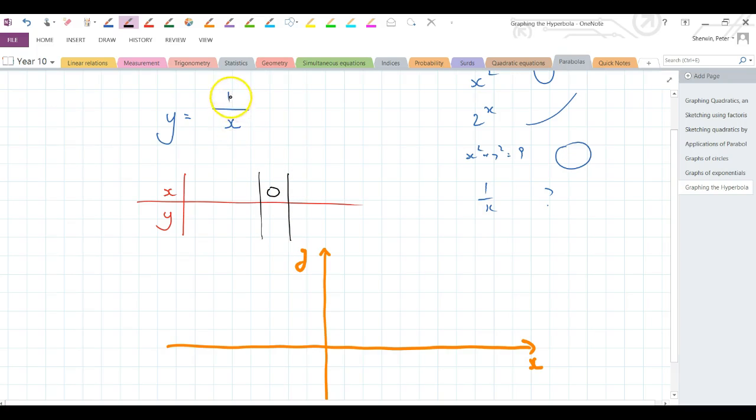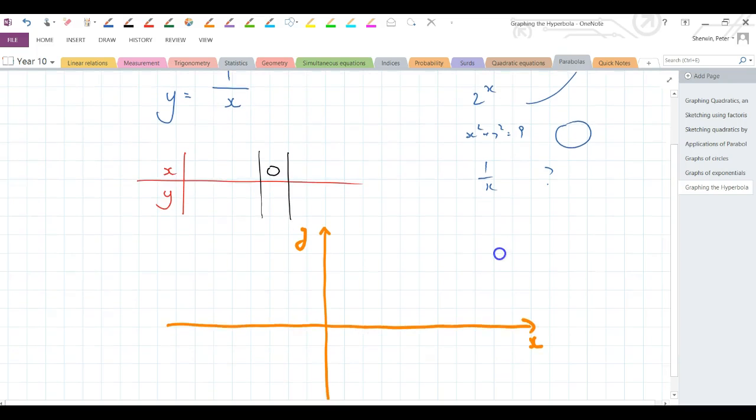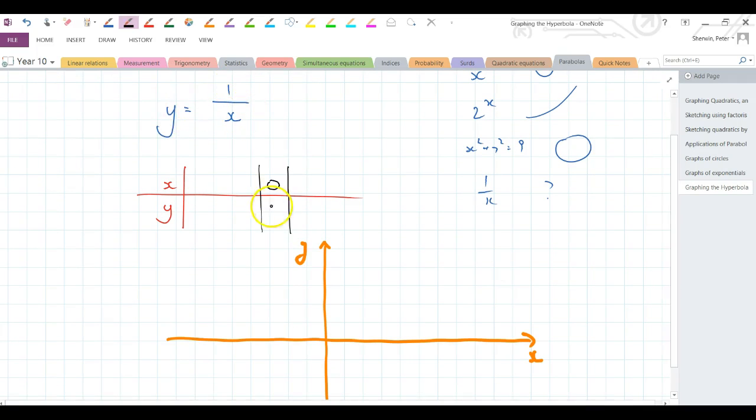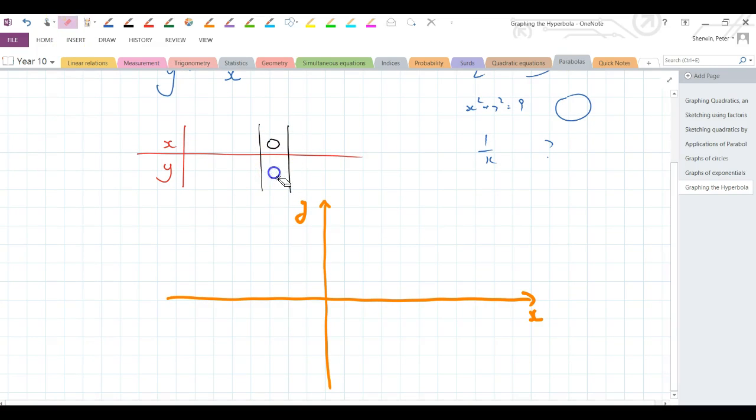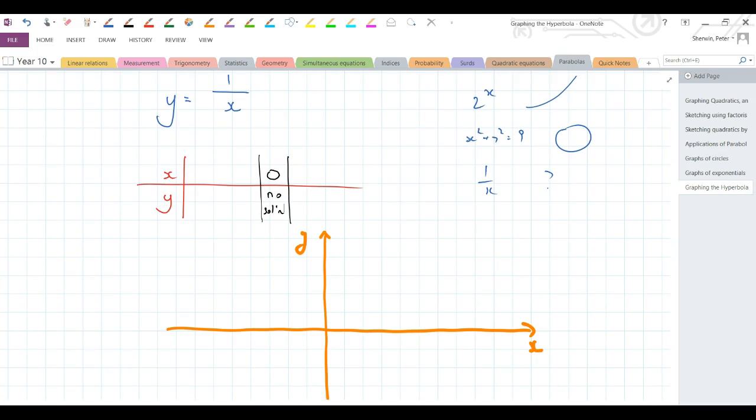All right, when x is 0, what happens? 1 divided by 0. Tell me what you think is the result when y equals 1 divided by 0. What's the value of y when we make x equal to 0? Okay, hopefully, you've said something along the lines of, that can't be calculated. You divide by 0. There is no solution to that. How do you divide by 0? So in here, we're going to put, I don't know, a question mark. No solution. Can't do it. So there is nothing. All right, the question mark's not very good, is it? There is no solution to this. So I'm going to write no solution. No solution. There is nothing we can, there is no value of y for x equals 0.